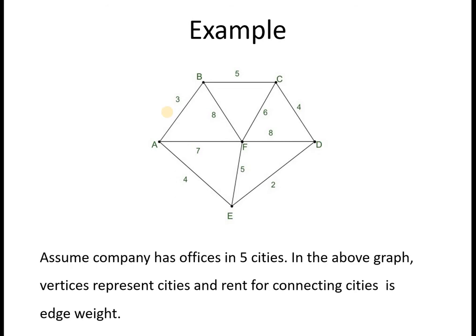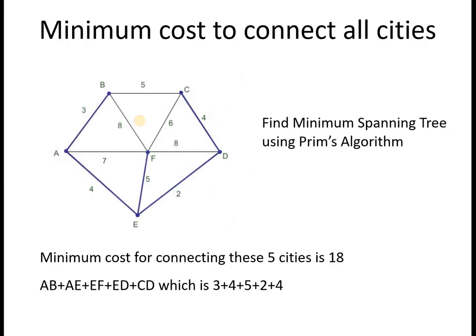For example, here there are six offices: A, B, C, D, E and F. These are the locations. The vertices represent the offices, and the rent for connecting the cities is the weight of the edges. So this is almost a complete graph — every office is connected to every other office through an edge. This edge cost represents the rent for the telephone line connection. If you calculate the minimum cost to connect all the cities, you get the answer by finding the minimum spanning tree using Prim's algorithm.